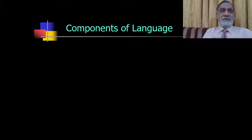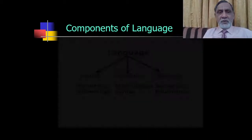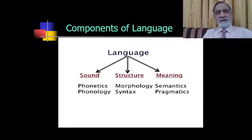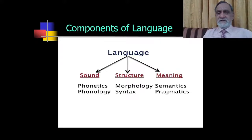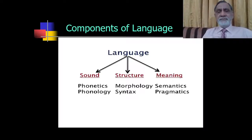That is what we defined about Linguistics, and then at the tail of the lecture we talked about the components of language. Language consists of three main parts: sound, structure, and meaning. In sound we have phonetics and phonology; in structure we have morphology and syntax; and in meaning we have semantics and pragmatics. Today we are going to discuss in detail what phonetics and phonology are.